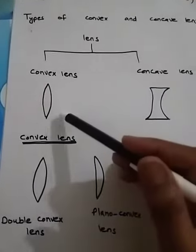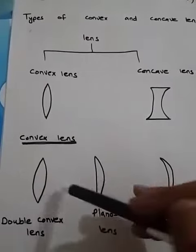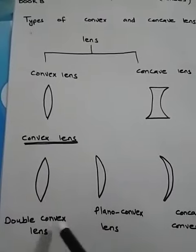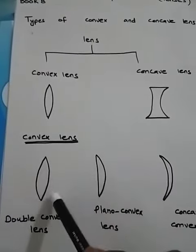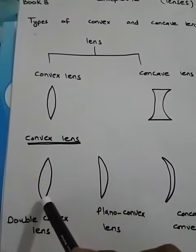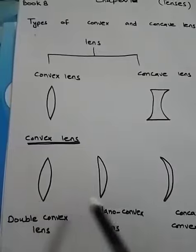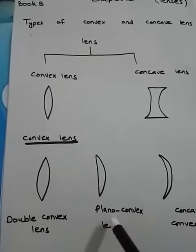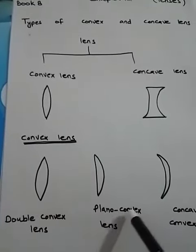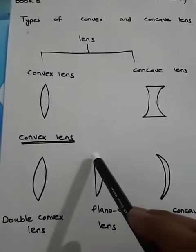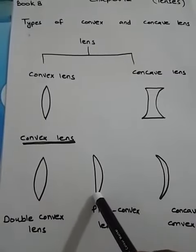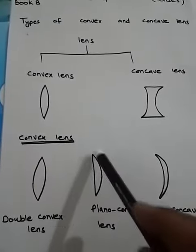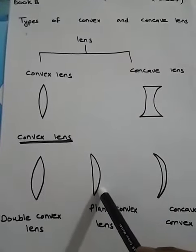Now, convex lens has three different types. The first is double convex lens — it is curved outwards from both sides. The second type of convex lens is plano convex lens — from one side it is plain, but from the other side it is curved outwards.